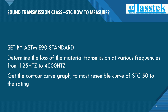By understanding the STC rating of materials, we know how much sound will be blocked from going through those materials. This is especially important in commercial construction, particularly for the glazing scope. The Sound Transmission Class was first introduced in 1961 and has since become the standard single-number metric to describe sound-blocking materials. The standard is set by ASTM E90.